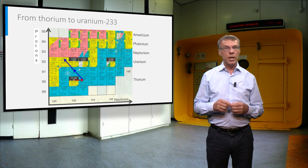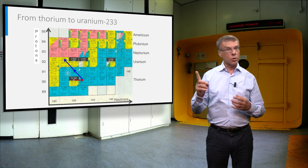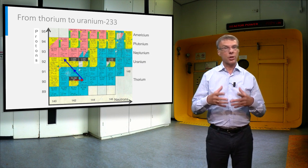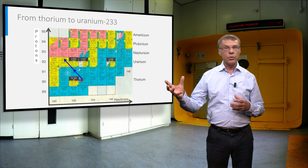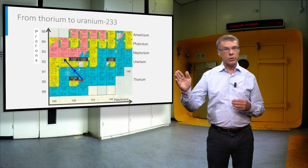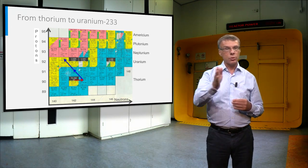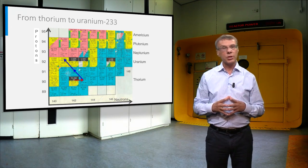This uranium isotope is an artificial one, but it is also highly fissile, just like uranium-235, which occurs in nature. In the thorium fuel cycle we first need to convert thorium-232 into uranium-233 to fission this afterwards.